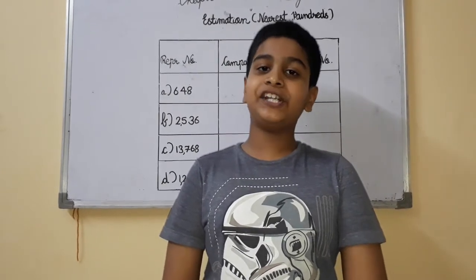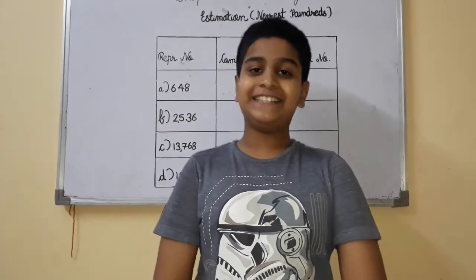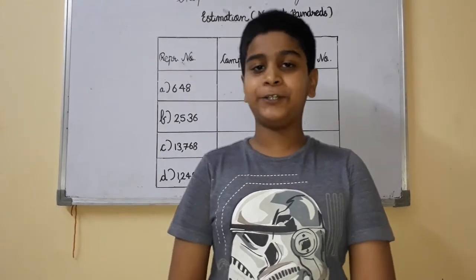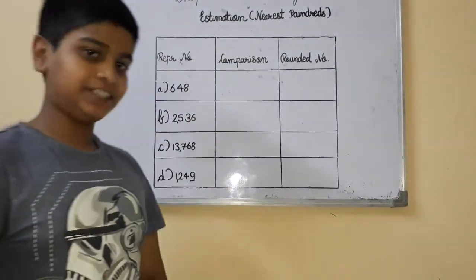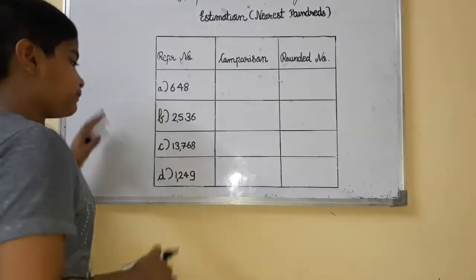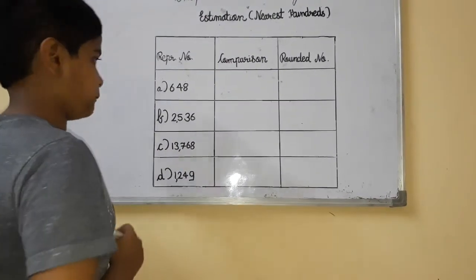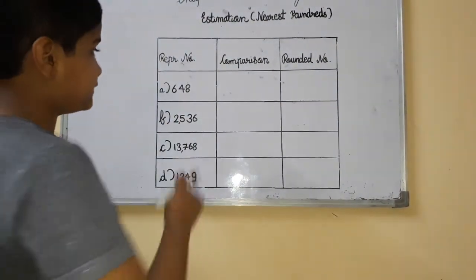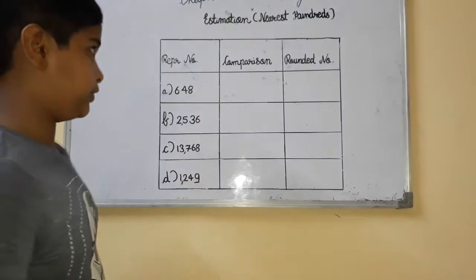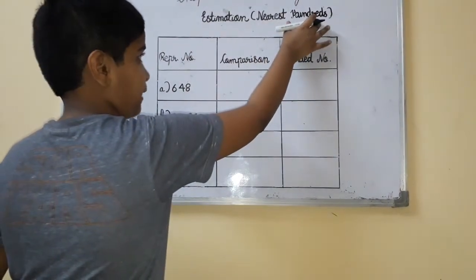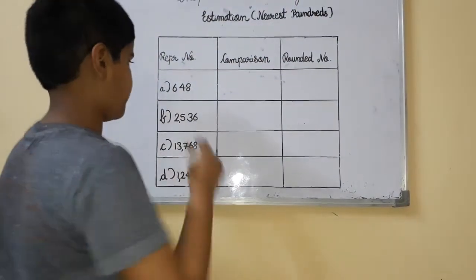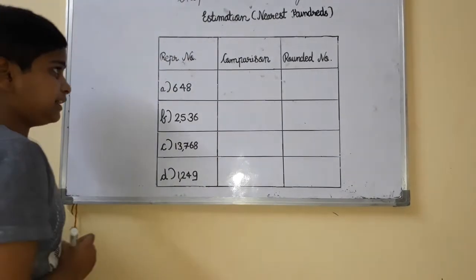Friends, I am going to demonstrate estimation to the nearest hundreds. Let's get started. Just like I told you about the nearest tens, we are going to represent the numbers in one place, and for the nearest hundreds, we are going to count down. The number of places here is the backward number of places. Let's look at it.